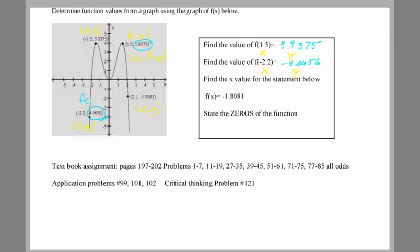That's f(negative 2.2). This one is f(1.5). Let's look at this last one, working with these ordered pairs.